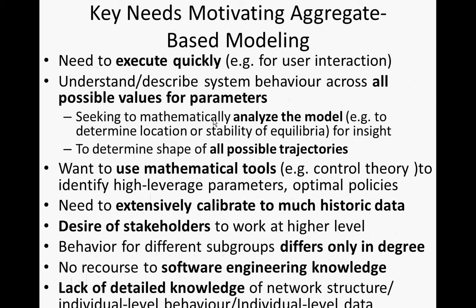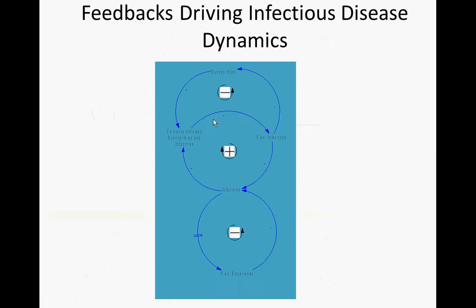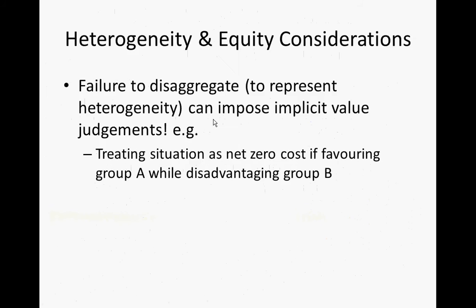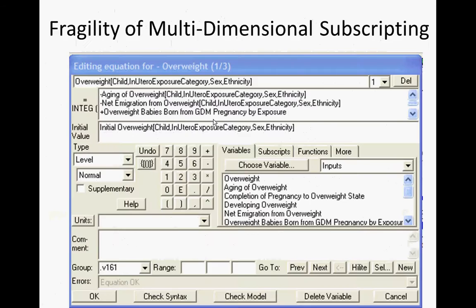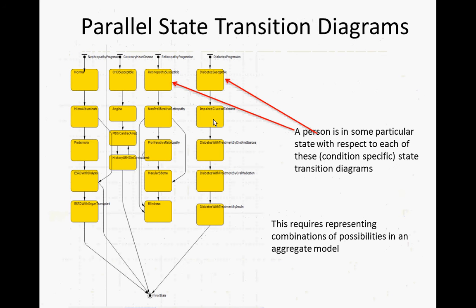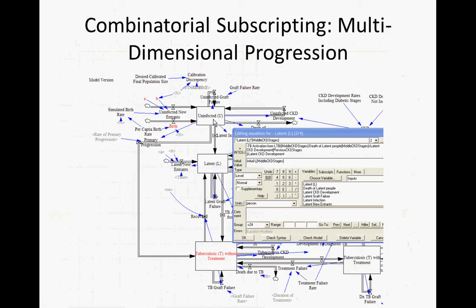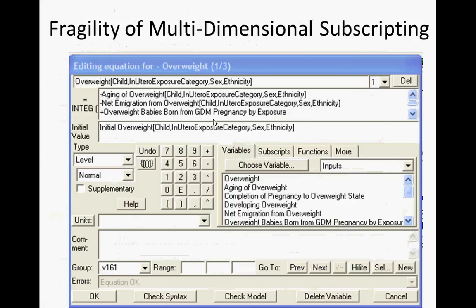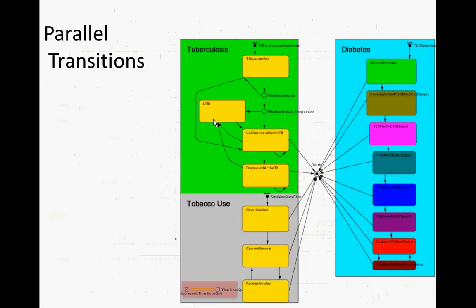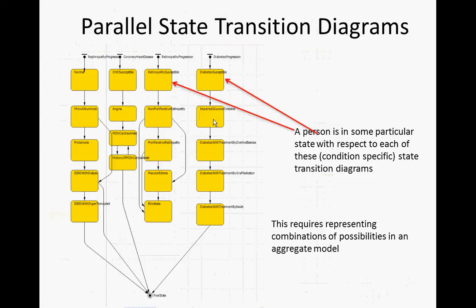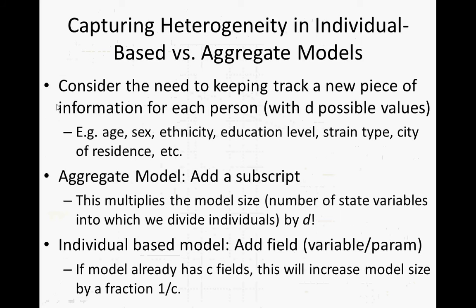Both sorts of modeling have key needs motivating them, and both are really useful. So fast-forwarding: heterogeneity and capturing progression across multiple domains is much easier to represent at the individual level, because we don't have to represent all possible combinations of states. In a subscripted model, we have to represent the rules for any possible combination of states — age, in-utero exposure, sex, ethnicity. At the individual level, we can represent each condition more or less separately, and they can interact only at very specific places where we wish them to.